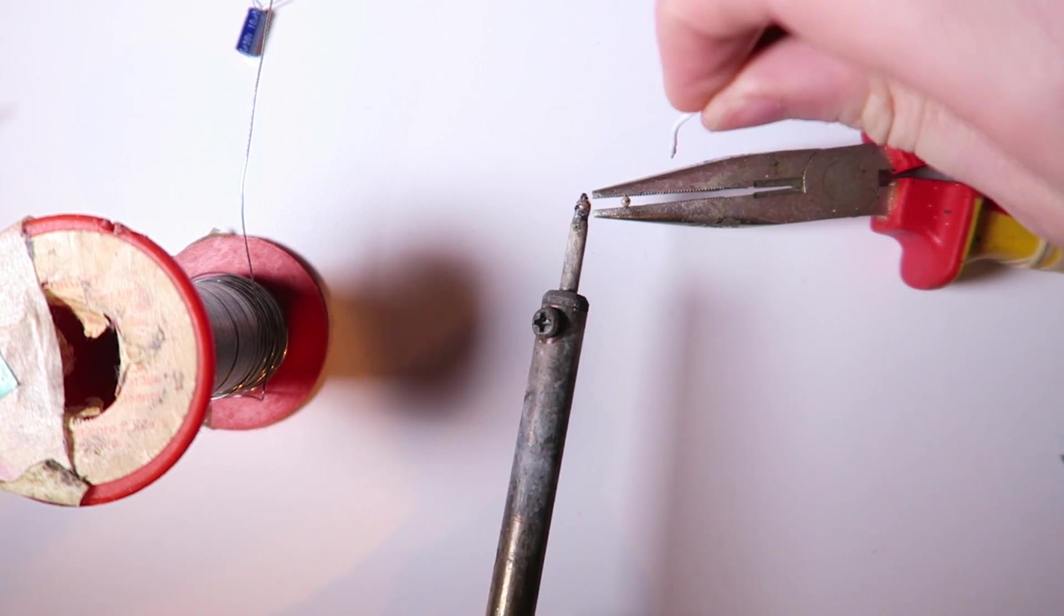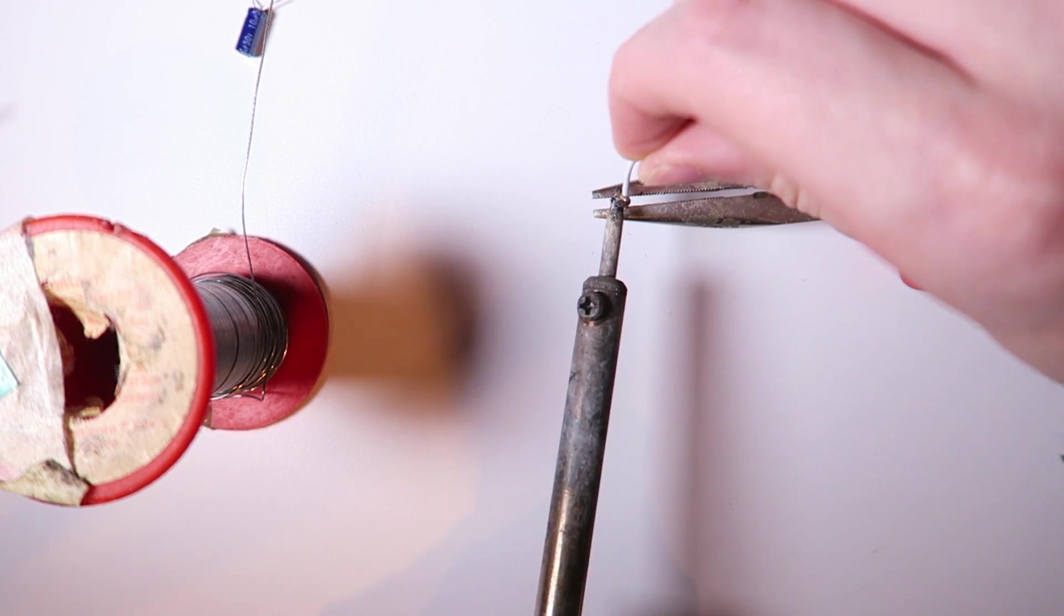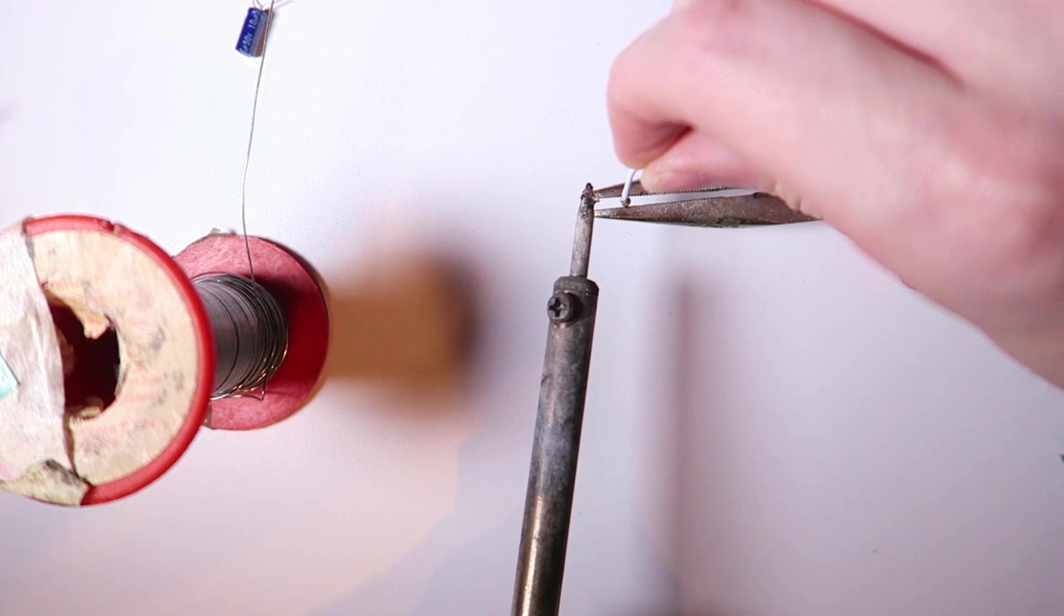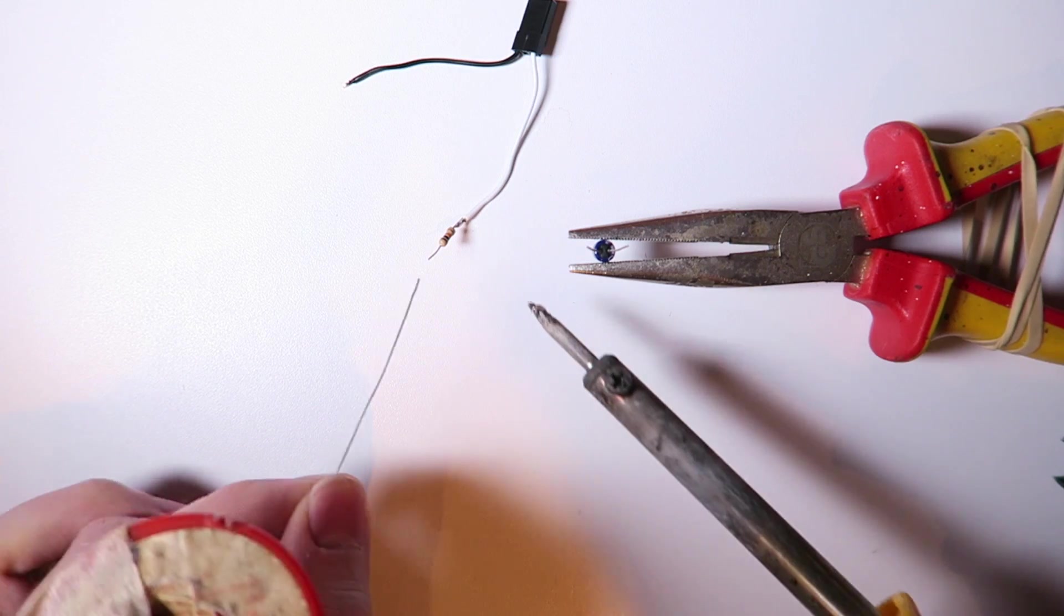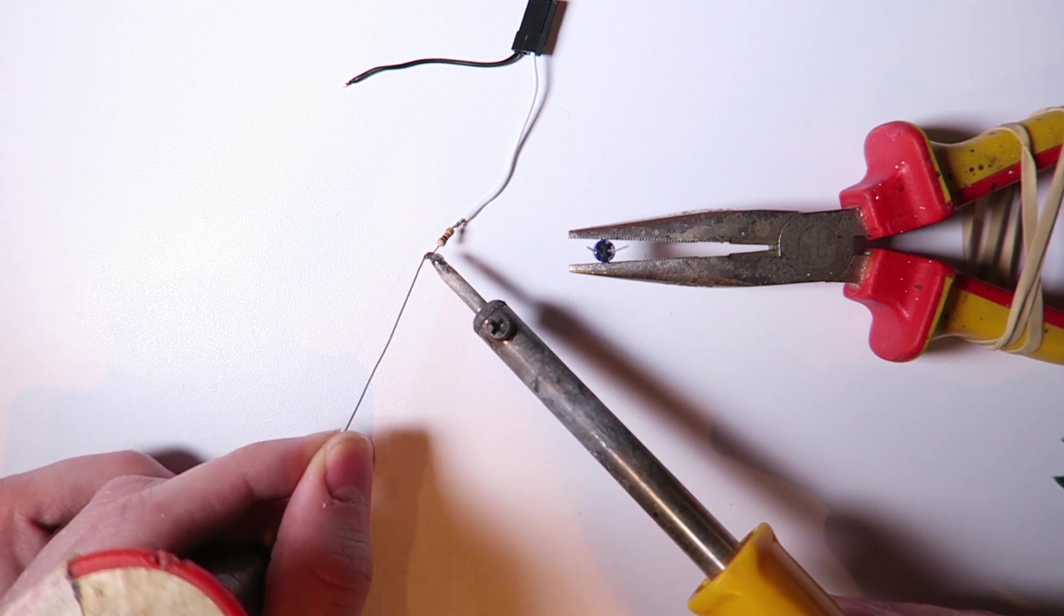Next we're going to take the signal wire and that is going to solder onto the resistor. It doesn't have to be in any order, it can be either end. Then I'm going to tin the resistor.